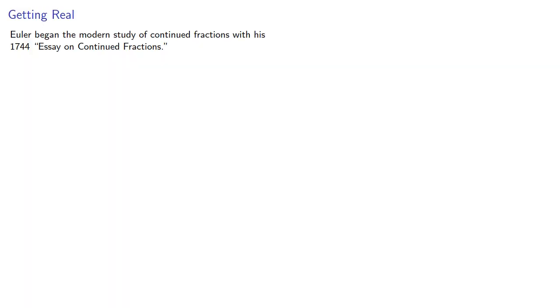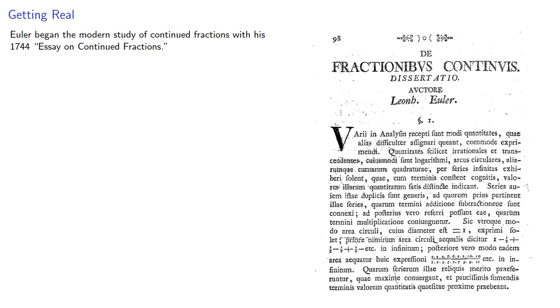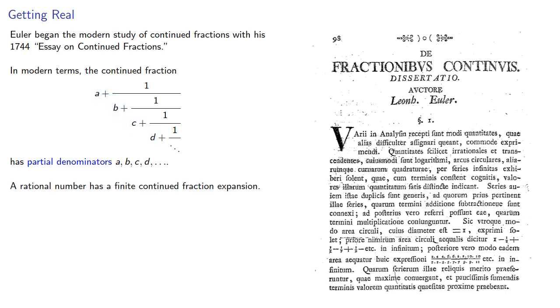Euler began the modern study of continued fractions with his 1744 essay on continued fractions. To continue the discussion, it helps to introduce some terminology. In modern terms, the continued fraction has partial denominators a, b, c, d, and so on (though it's not really a denominator). It should be clear that a rational number has a finite continued fraction expansion.